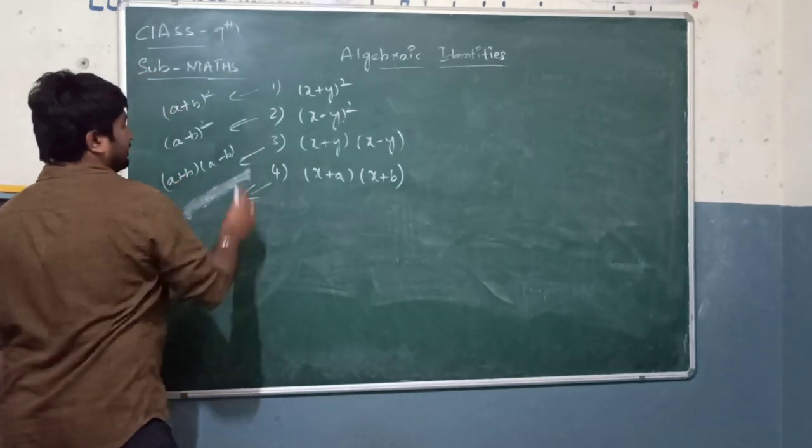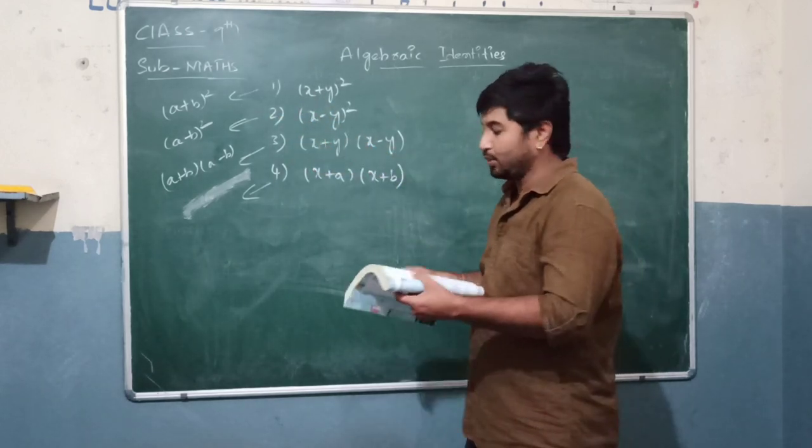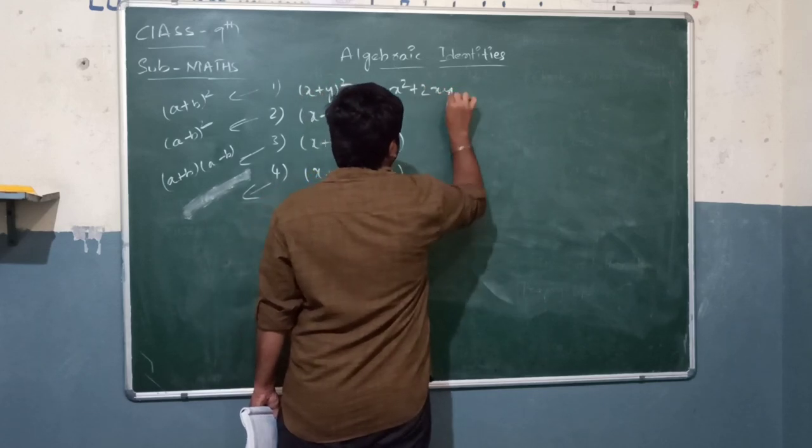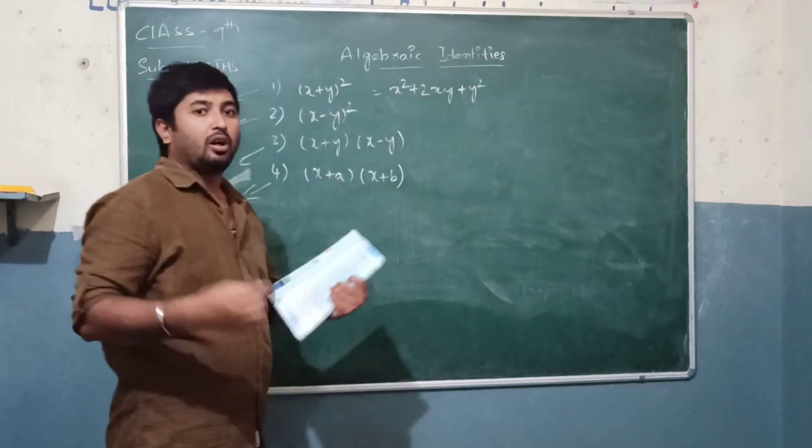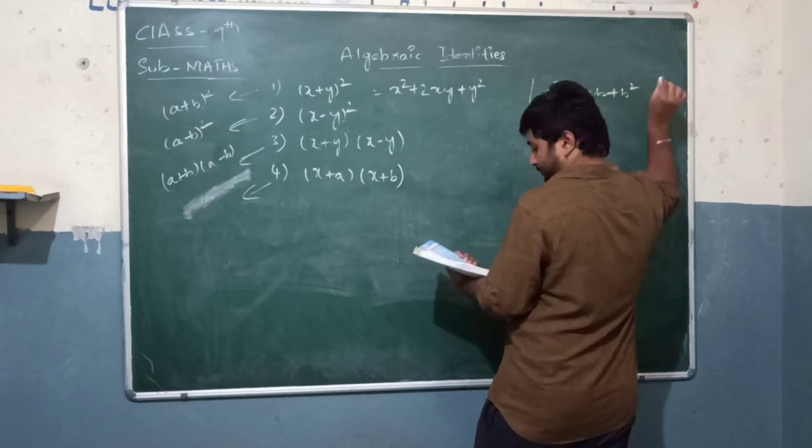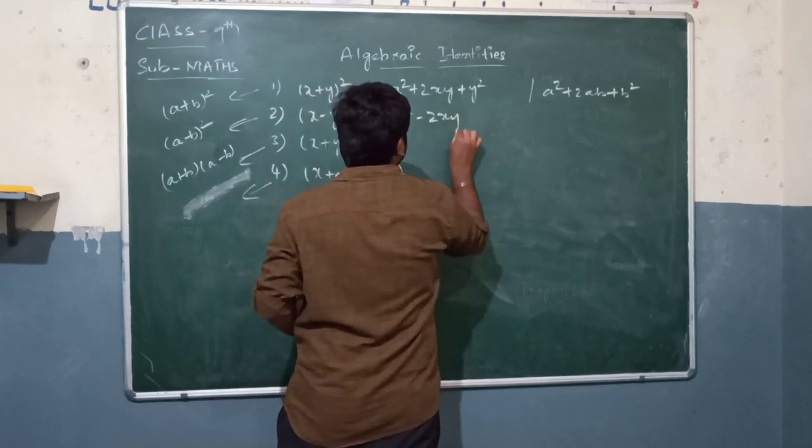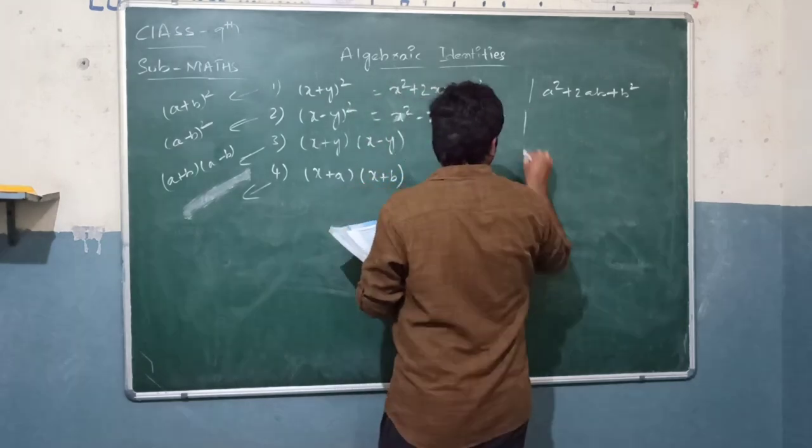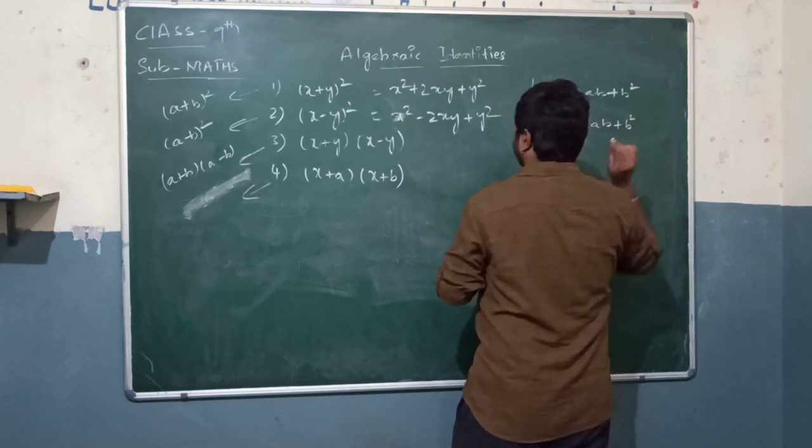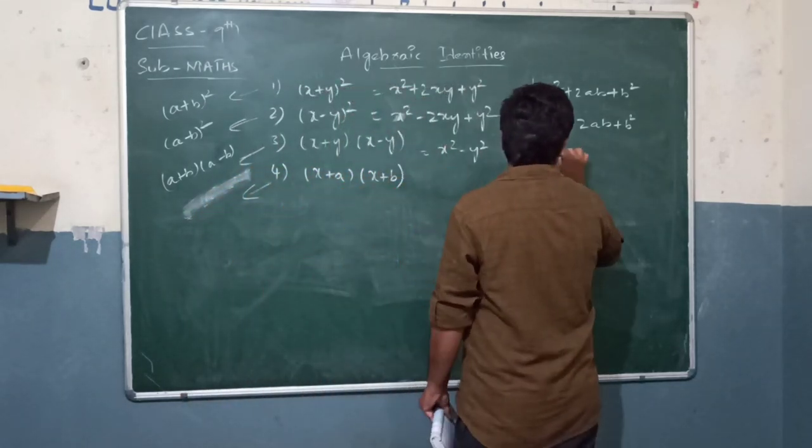First, x plus y whole square equals x squared plus 2xy plus y squared. Or you can write a plus b whole square equals a squared plus 2ab plus b squared. Next: x minus y squared equals x squared minus 2xy plus y squared, the same as a squared minus 2ab plus b squared.